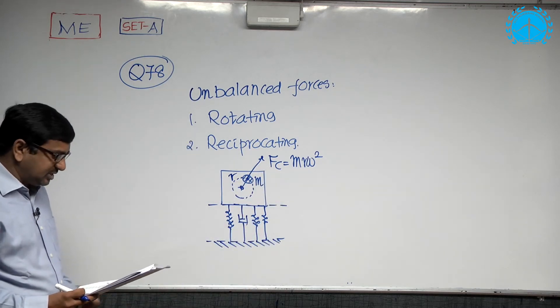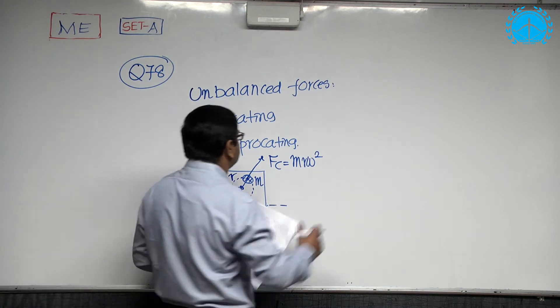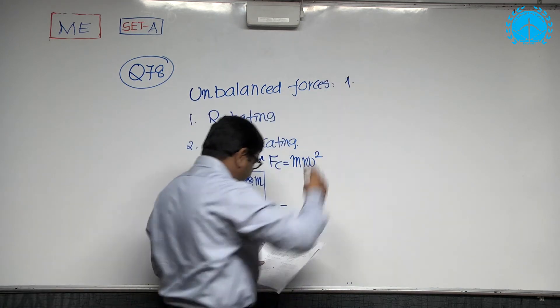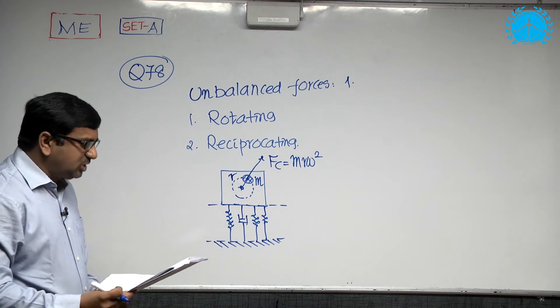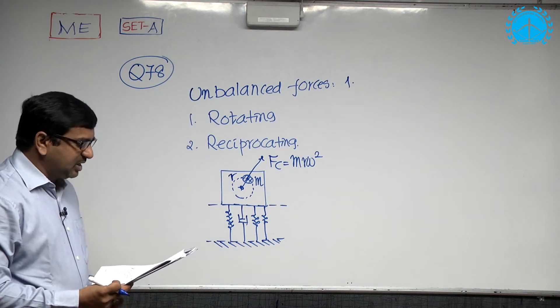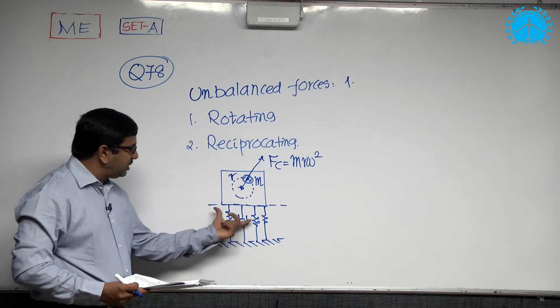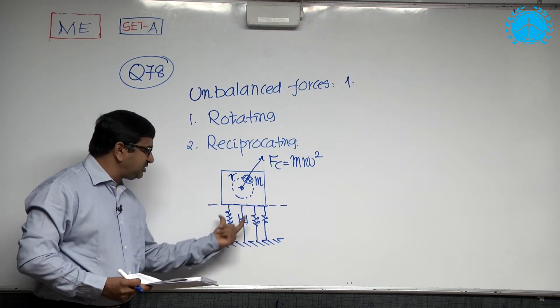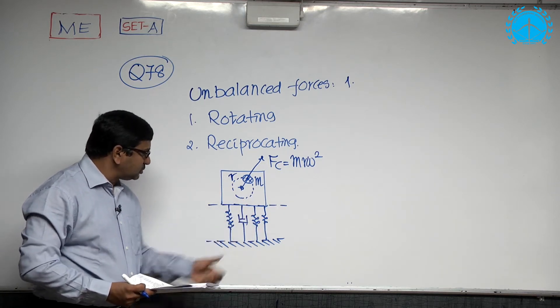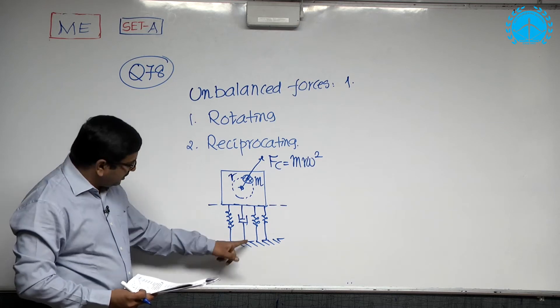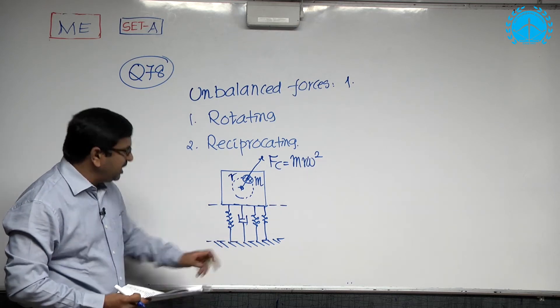The first statement says mounting of machine on springs thereby minimizing the transmission of forces. That means if it is mounted onto springs, which is a foundation equivalent as springs, it minimizes the forces onto the base.